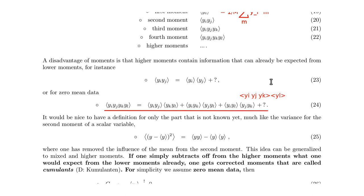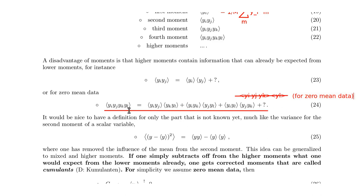Since we assume zero mean data, terms involving a first-order moment all vanish. So for zero mean data, these pairwise second-order products are the ones we would expect from lower orders, and everything else is zero. There's something left that is only in the fourth order statistics and not in the lower order statistics — it would be nice to pick out that particular information.